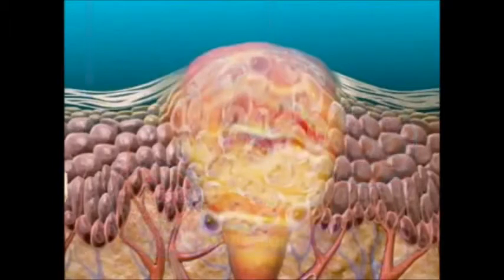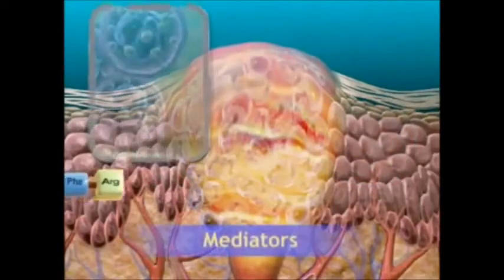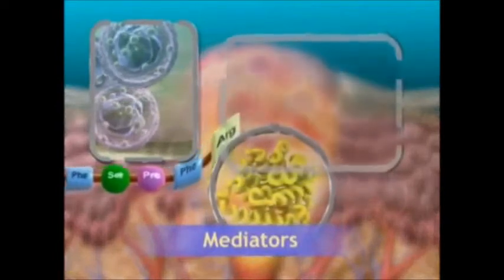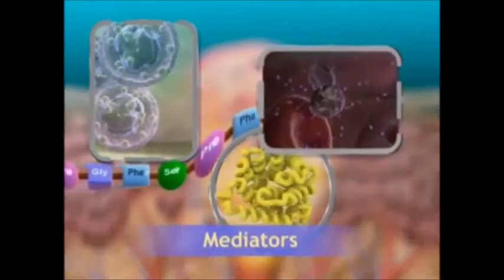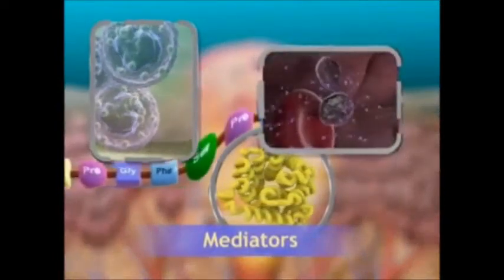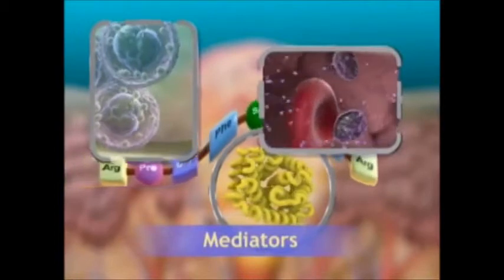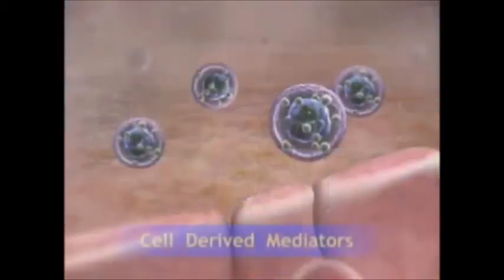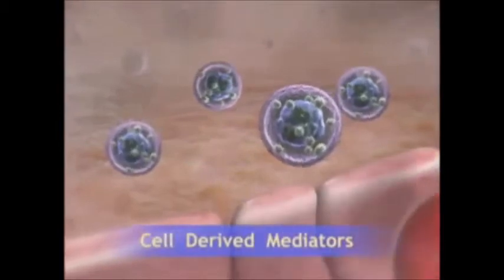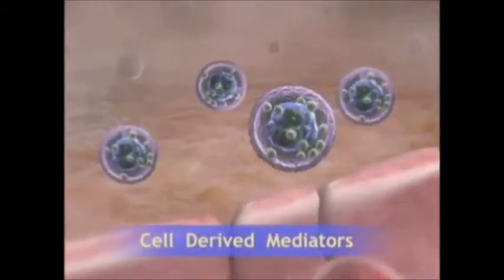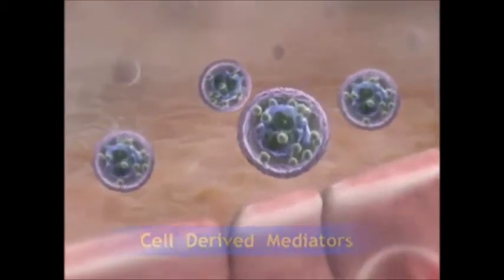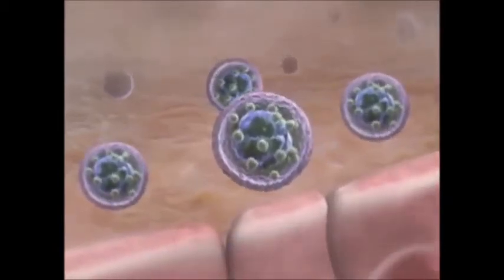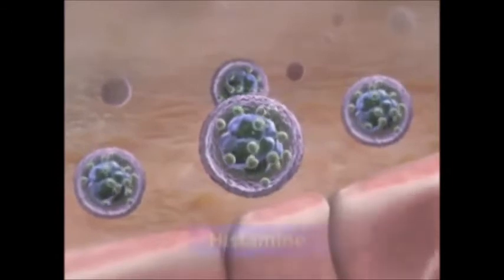Concurrent with the events of the vascular and cellular stages, chemical mediators release bioactive agents that act to mediate the inflammatory response. Mediators are derived from the cells or from plasma. One of the first mediators of an inflammatory response is a cell-derived mediator, histamine, found in high concentrations in the mast cells of connective tissues adjacent to blood vessels, as well as in blood basophils and platelets.